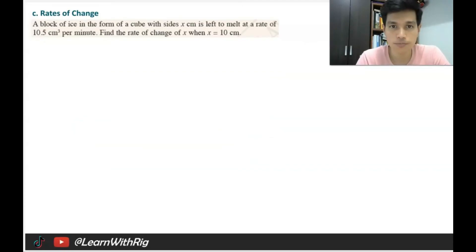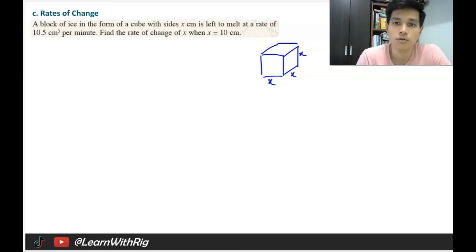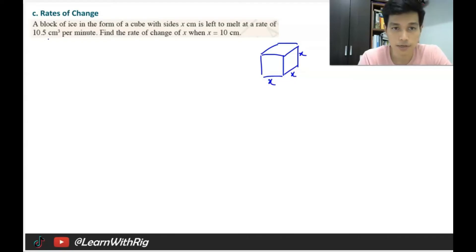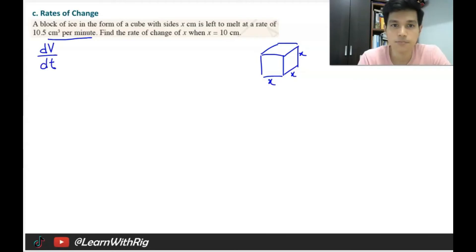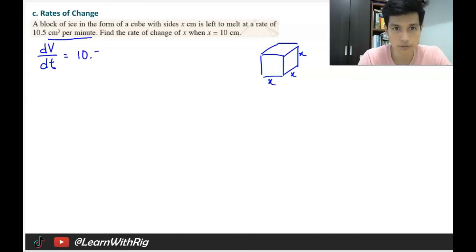A block of ice in the form of a cube with side length x is left to melt at a rate of 10.5 cm³ per minute. The unit cm³ represents volume, so this is dV/dt. However, since the volume is decreasing (melting), dV/dt = −10.5 cm³ per minute. Make sure to use the negative value, otherwise you'll get the wrong answer.